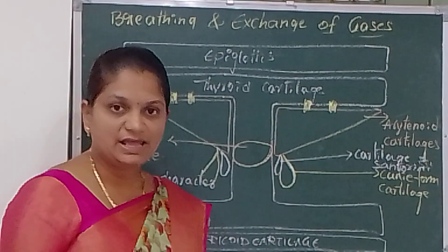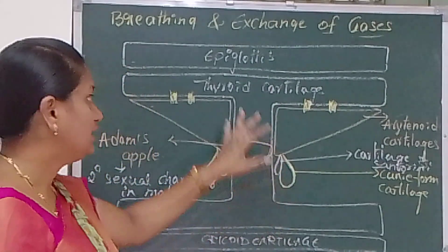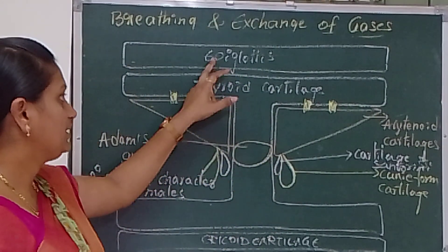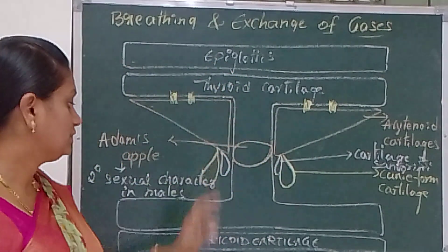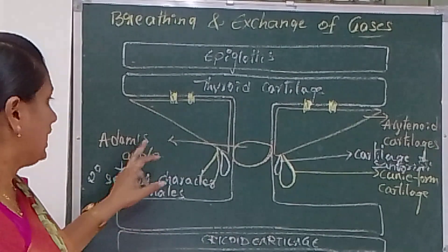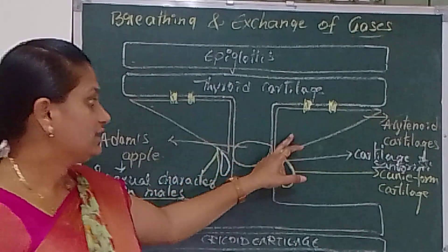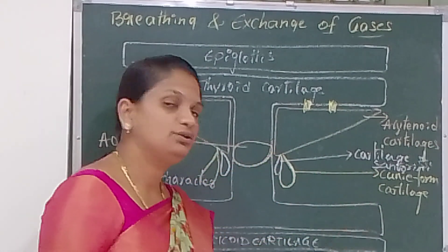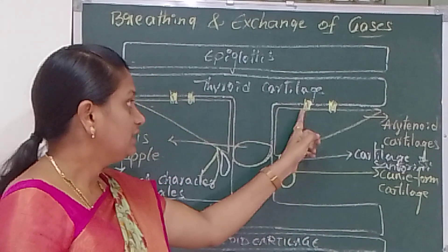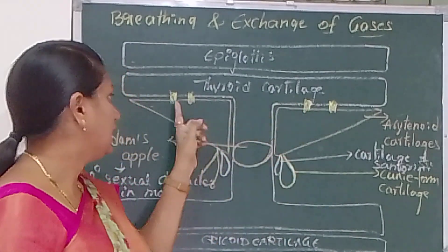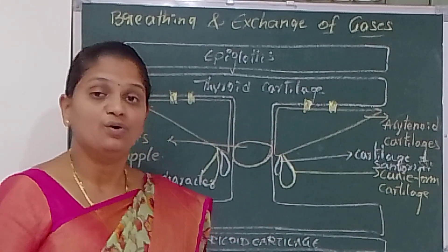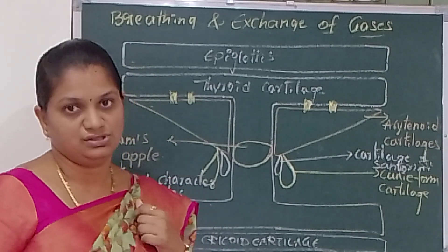So this is the structure of the larynx. The larynx is made up of nine cartilages: epiglottis, thyroid cartilage, cricoid cartilage, arytenoid cartilage, cartilage of Santorini, and cuneiform cartilage. They also have a pair of elastin flap-like structures called vocal cords.